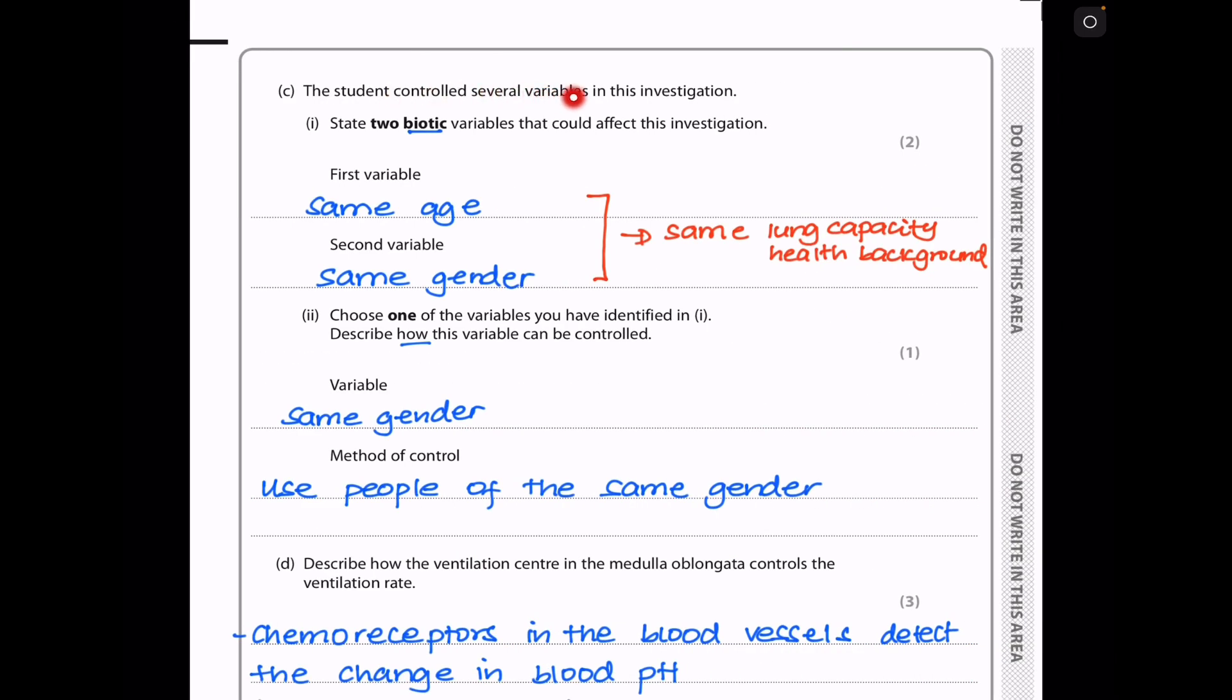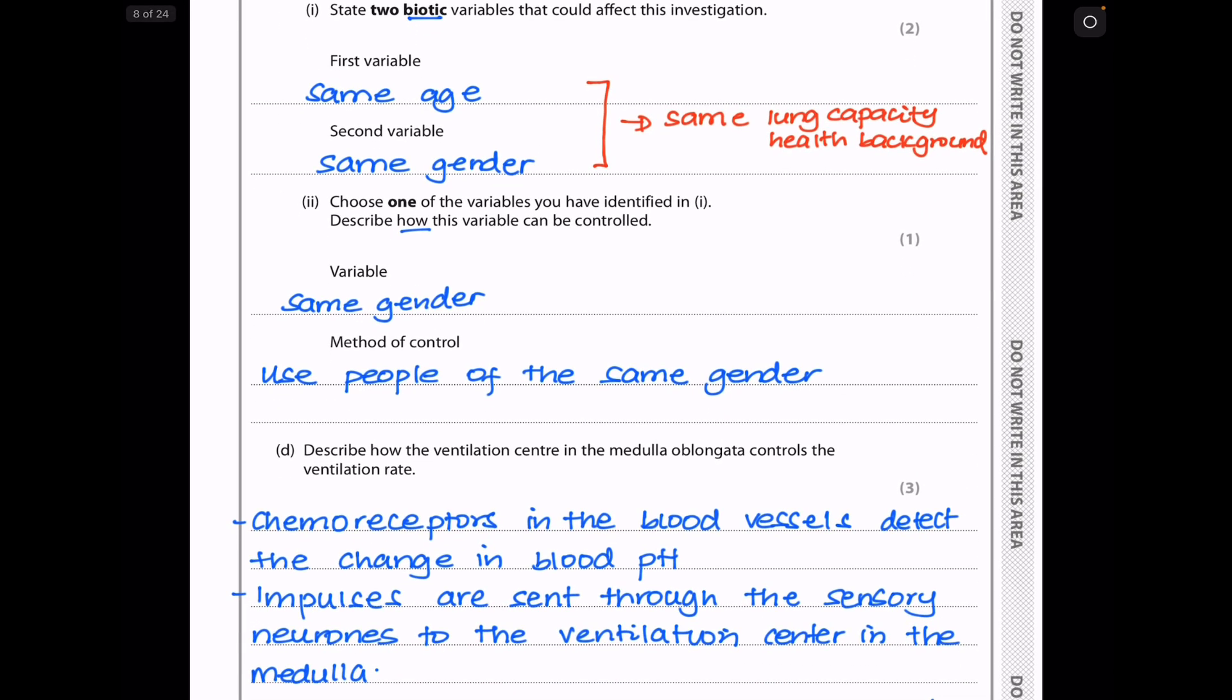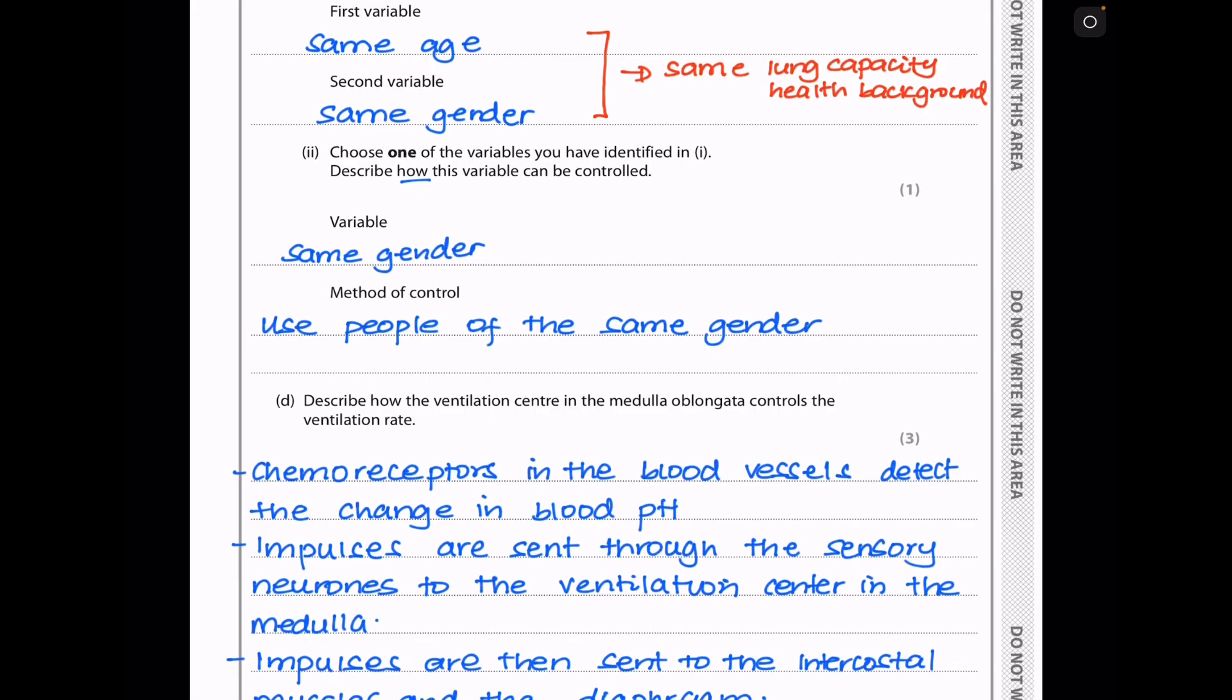Then in part C, they say the student controlled several variables in this investigation. They tested two biotic variables that could affect this investigation. The age of the volunteers could affect the investigation because people with different ages have different lung capacities. Also, the gender could affect. These two factors cause differences in lung capacity, and that could affect the investigation. The next they say choose one of the variables you have identified and describe how this variable can be controlled. For gender, use people of different genders.